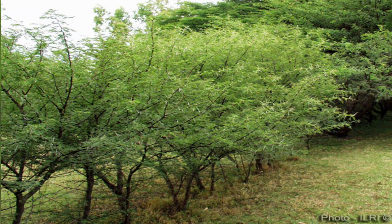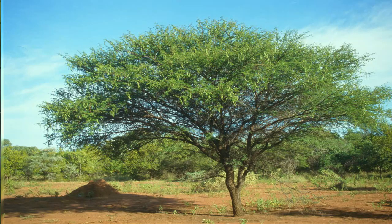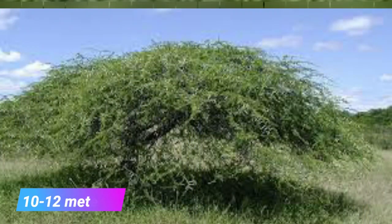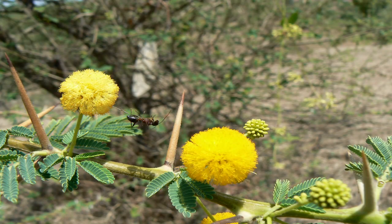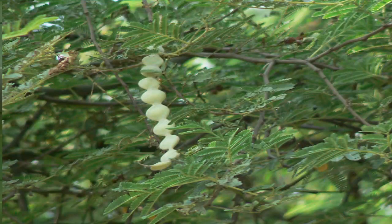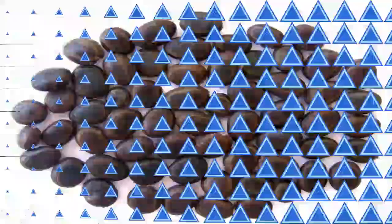Looking at the description of the plant, Acacia Nellotica is a tree up to 10 to 12 meters high. The top gives a rounded appearance and the leaves are compound, appearing in the rainy season. The flowers form small yellow balls at the end of the axis. The fruits are gray or whitish pods containing seeds, which are black inside.